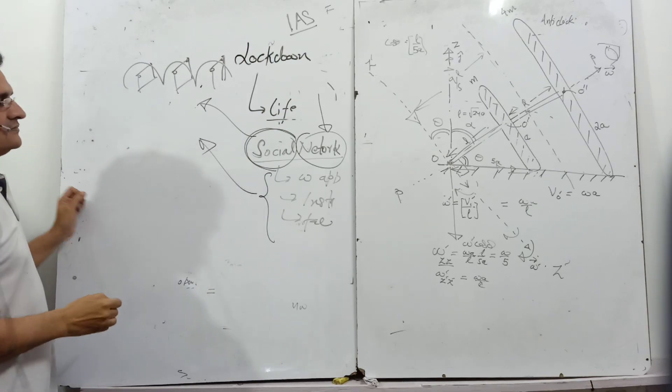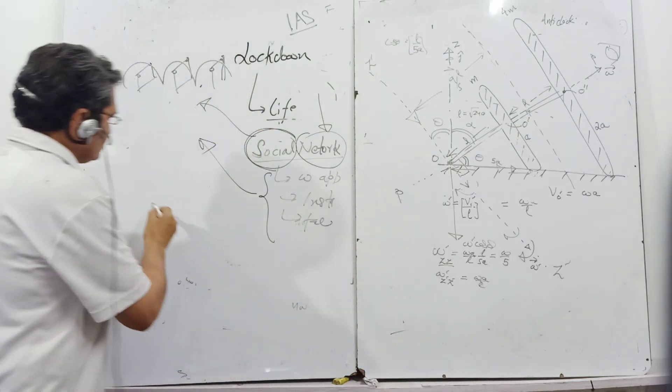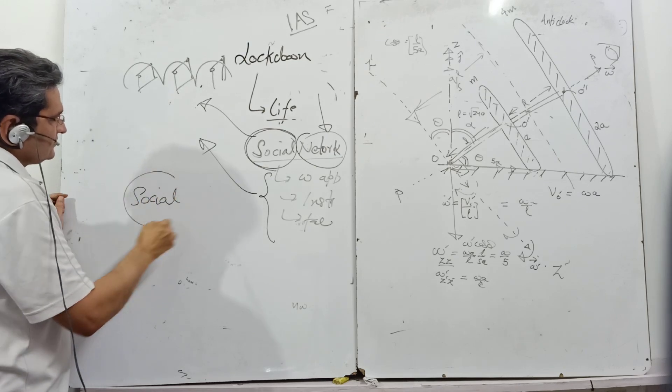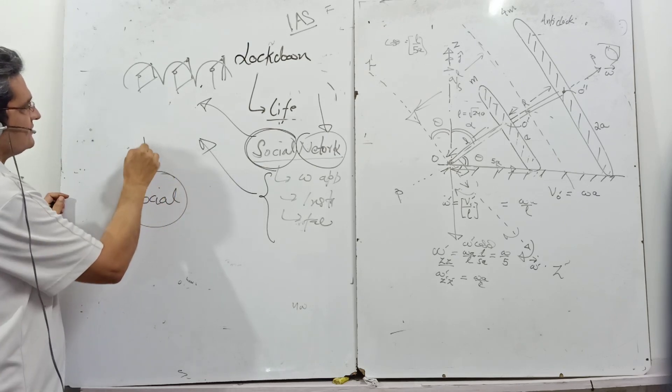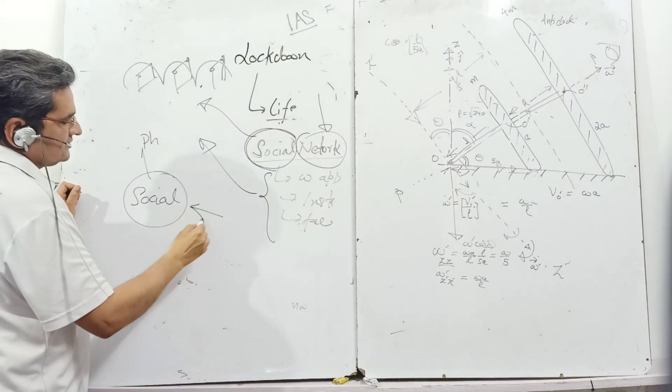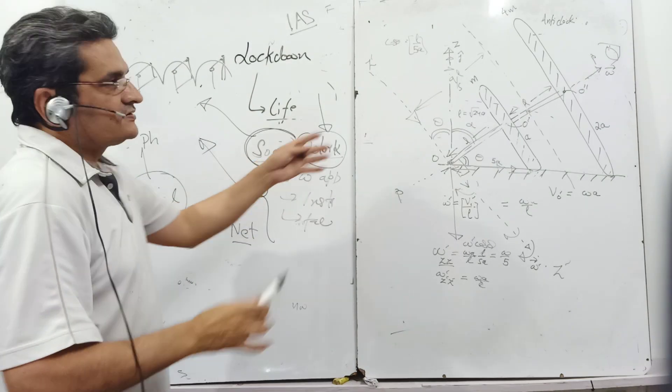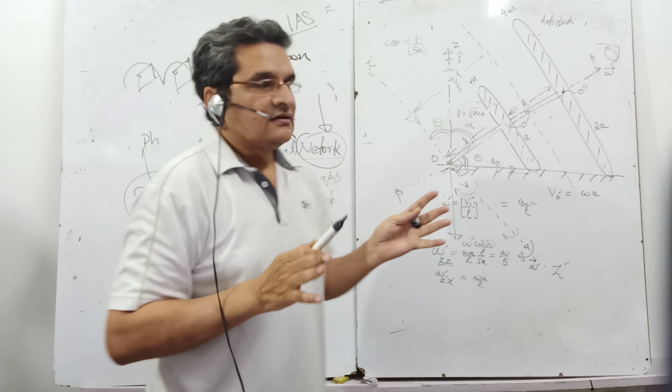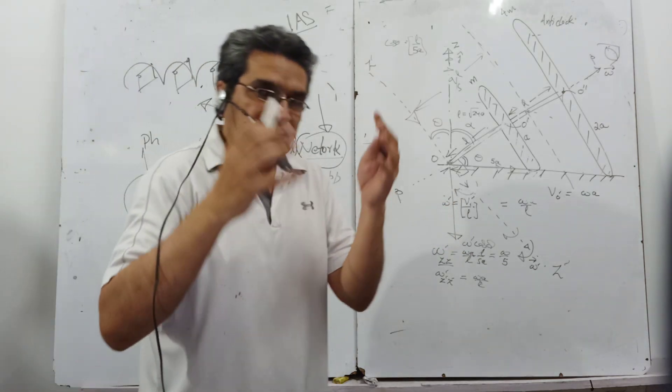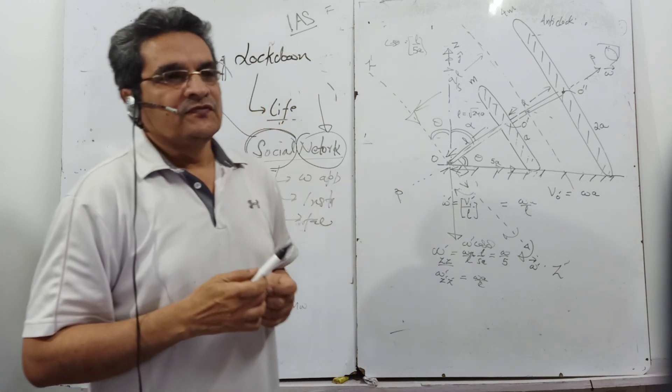What lockdown may unfortunately do is we may have social distance but we may stick to network just to reduce the boredom. One is the social aspect of life in physical terms when we meet somebody, and one is through net. So we are maintaining social distance physically but through network we still have that social network, and it consumes a lot of our time. It eats into our vital time.